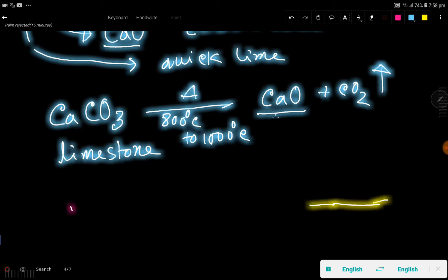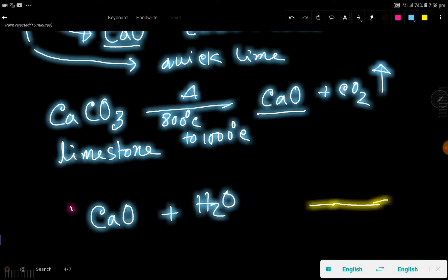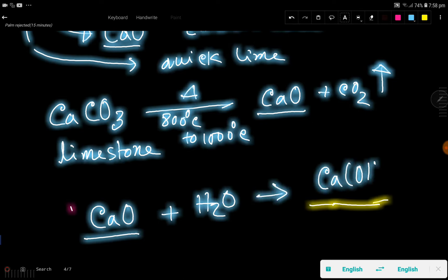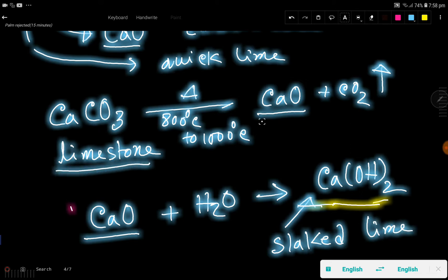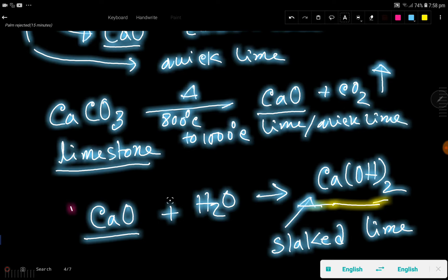If lime or quick lime reacts with water, this quick lime will react with water and we'll get calcium hydroxide. This calcium hydroxide is called slaked lime. From limestone we get lime or quick lime, and if quick lime reacts with water, we get calcium hydroxide or slaked lime.